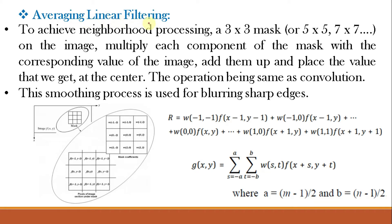Averaging linear filtering involves averaging the values of neighborhood pixels. To achieve neighborhood processing, we place a 3×3 mask on the image, multiply each component of the mask with the corresponding value of the image, add them up, and place the resulting value at the center. This operation is the same as convolution, and therefore these masks are also known as convolution masks. This smooths out the image by removing sharp discontinuities — the smoothing process is used for blurring sharp edges.